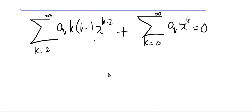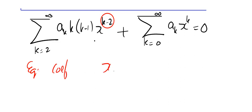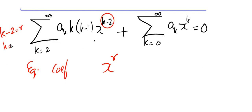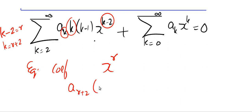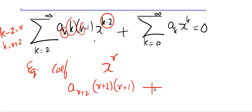Second order derivative plus y equal to 0. Now as usual, I look at the summation and I am going to write: equating coefficients of x to the power r on both sides. Look at the first summation — the power of x is k minus 2. So I ask myself: when will k minus 2 become r? Of course, when k is equal to r plus 2. So replace k with r plus 2: I get a sub (r plus 2) times (r plus 2) times (r plus 1), plus — in the second summation, when will this power become r? When k equal to r — so a sub r equals 0.